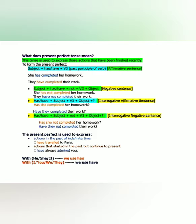For interrogative negative sentences: Has/have + subject + not + V3 + object + question mark. So 'Has she not completed her homework?' and 'Have they not completed their work?' This formula is for interrogative negative sentences.